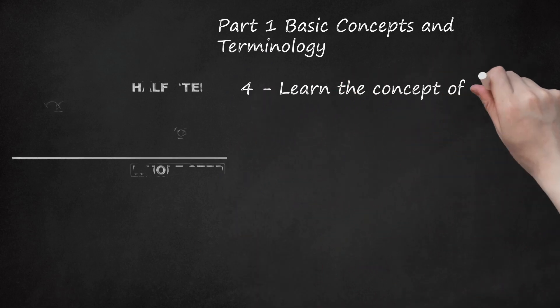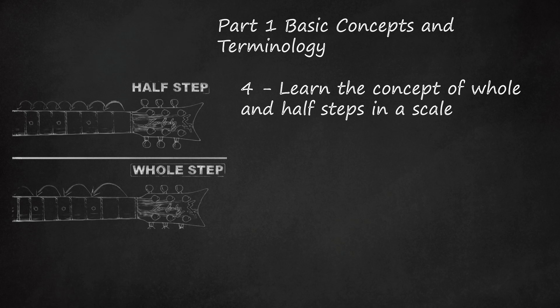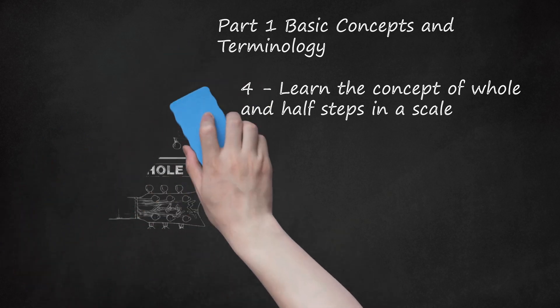Learn the Concept of Whole and Half Steps in a Scale. In simple terms, a scale is just a sequence of notes that sound nice when you play them in order. All scales are built from patterns of whole steps and half steps — these are just ways to describe different distances on the fretboard. A half step is a distance of one fret. For example, moving one fret up from C (A string, third fret) gives you C-sharp (A string, fourth fret) — they are one half step apart. A whole step is two frets: moving two frets up from C gives you D (A string, fifth fret), so C and D are a whole step apart.